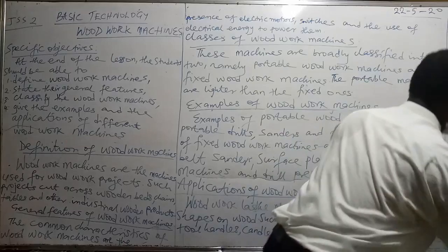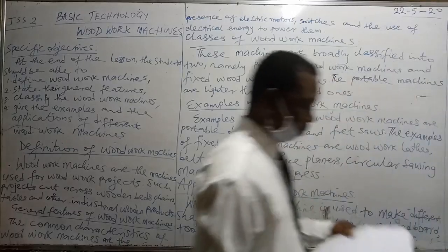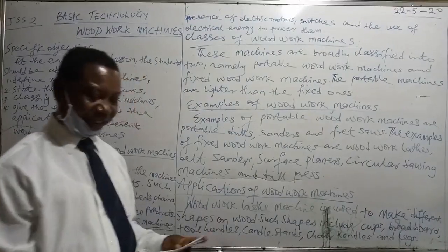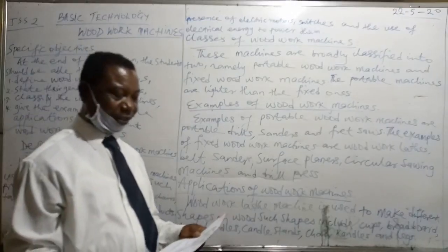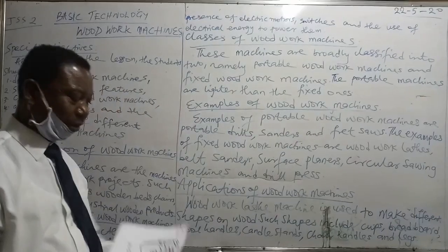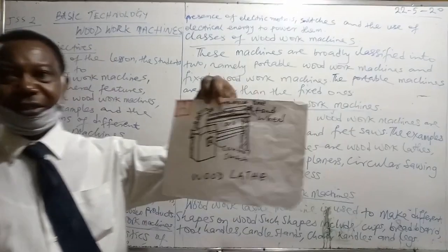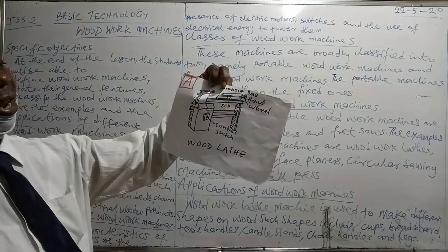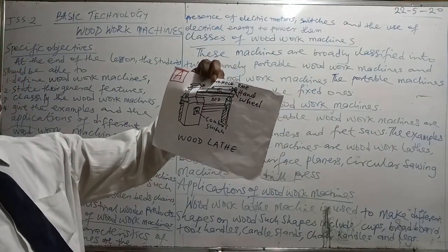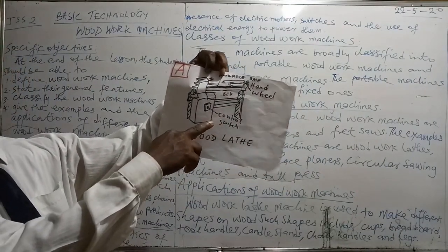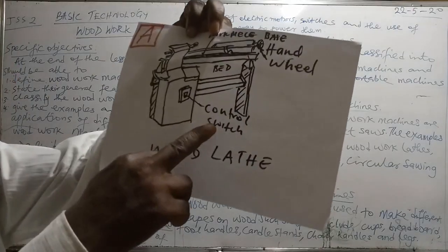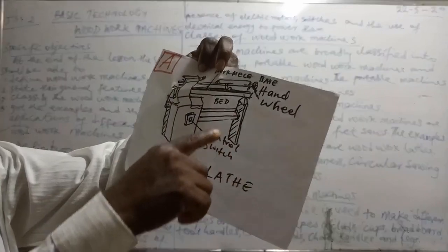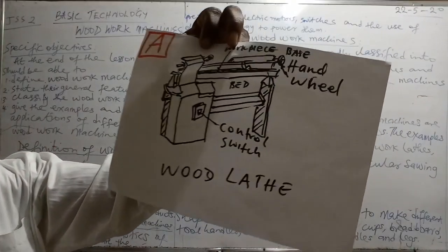For the fixed woodwork machines, they are there in our workshop. For the sake of this lesson, we have them in the diagrams in my hand. This diagram contains woodwork machines, and if you watch, there is what we call a control switch, as I have explained. Then we also have the hand wheel — this wheel refers to where the motor is being positioned.